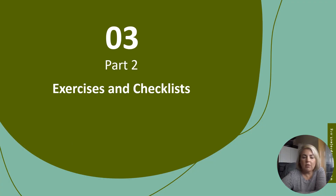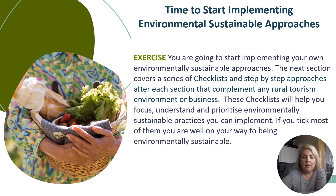Part two: exercises and checklists. It's time to start implementing environmentally sustainable approaches. This is an exercise where you will start implementing your own environmental sustainable approaches, looking at a few different checklists and step-by-step approaches to actually achieve this. It helps you focus, understand and prioritize what will work for your business, and as you implement each item you can tick them off to become an environmentally sustainable business.